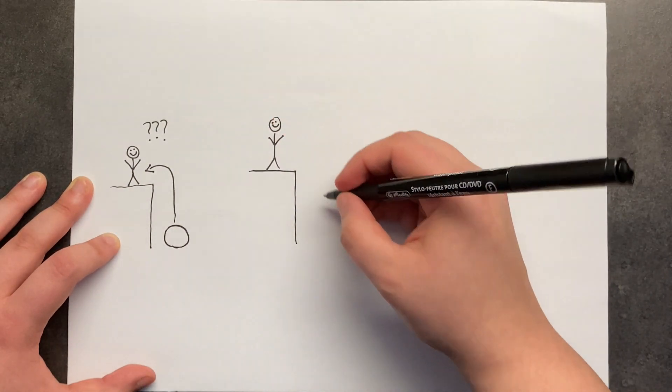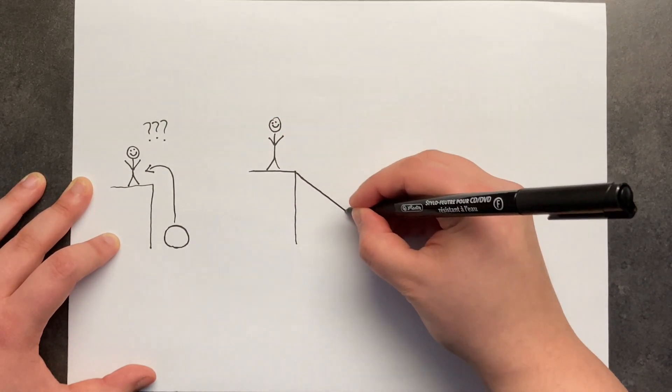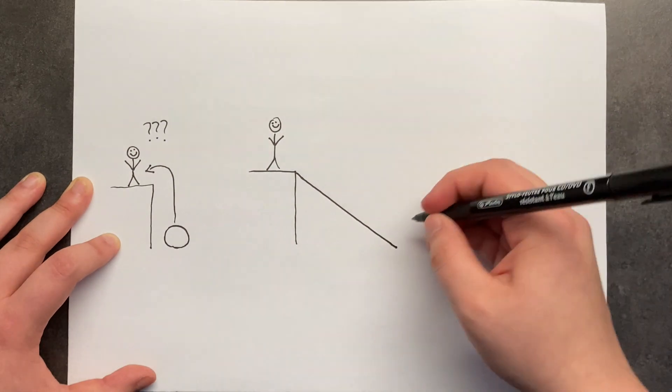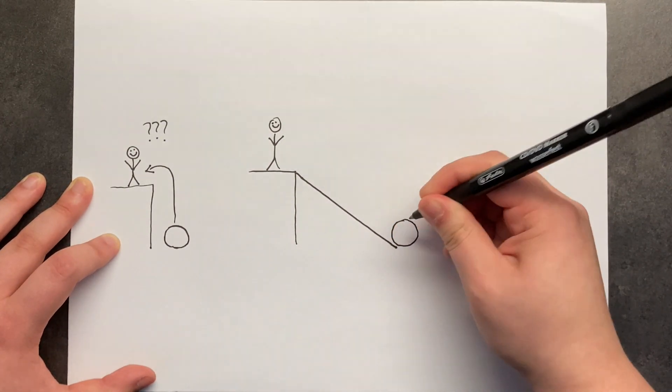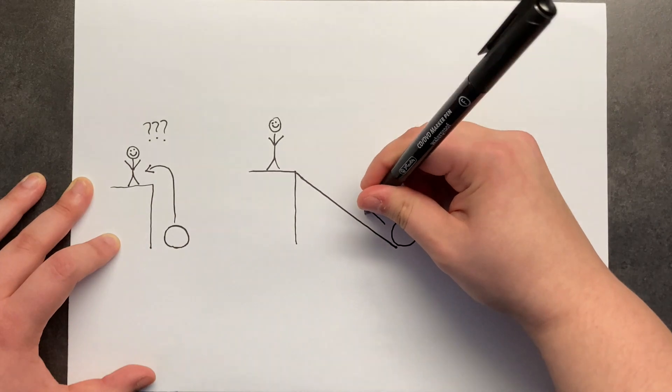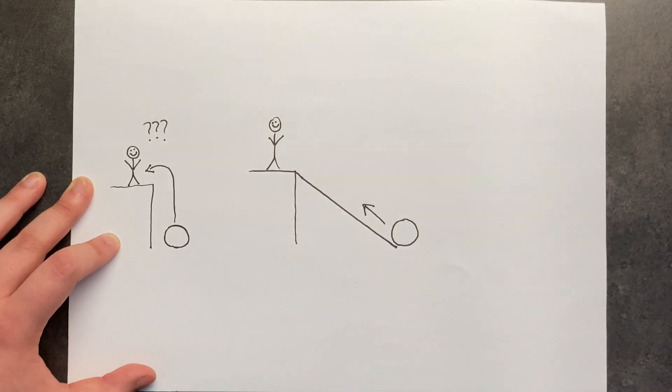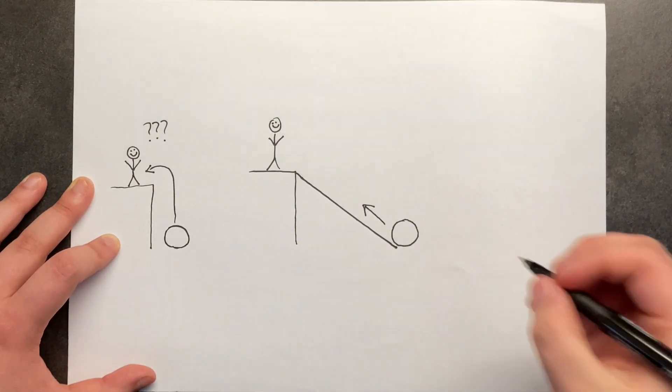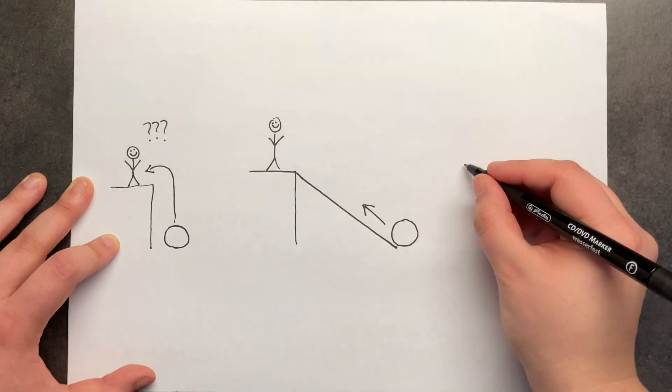So you build like a ramp there and your rock is here and you can roll it up without having to lift the heavy boulder. So an incline plane will help you move things up or downwards along the ramp.